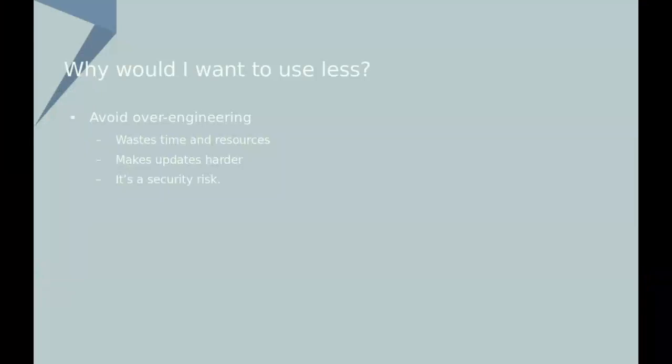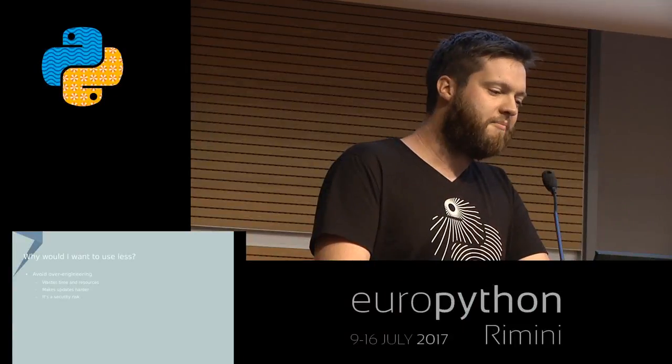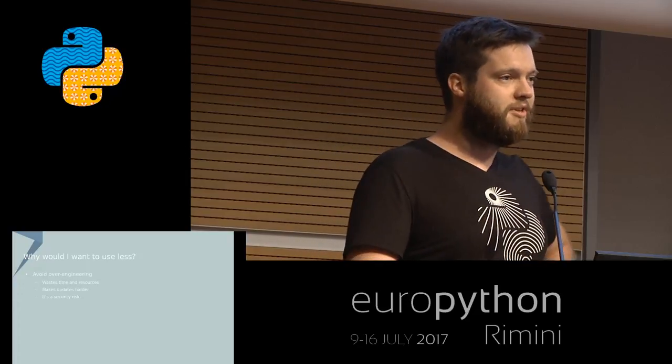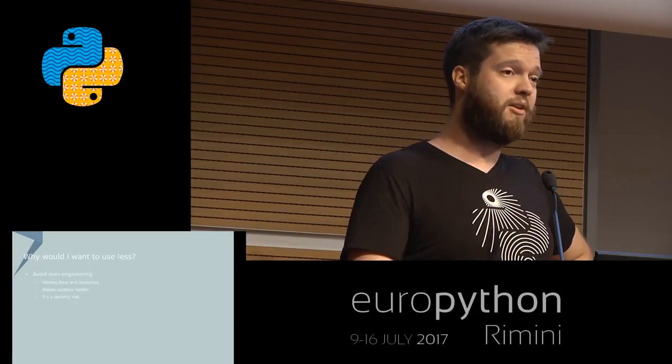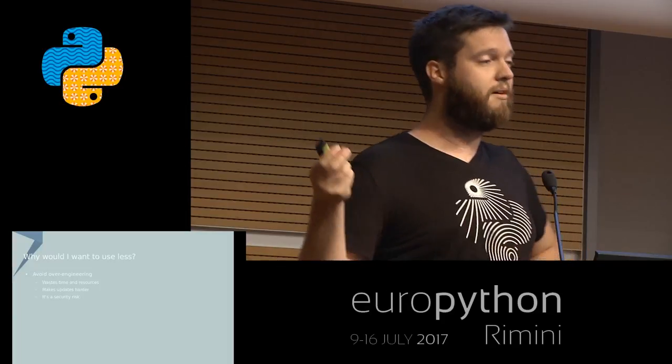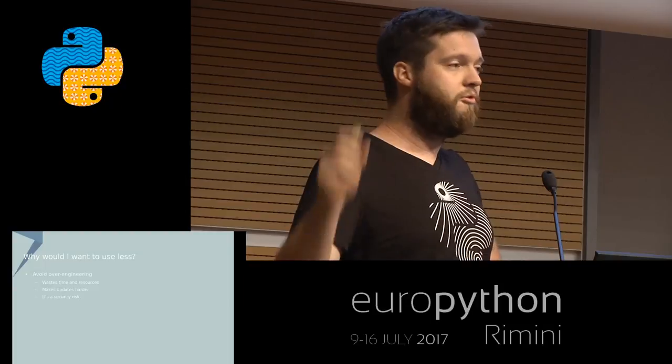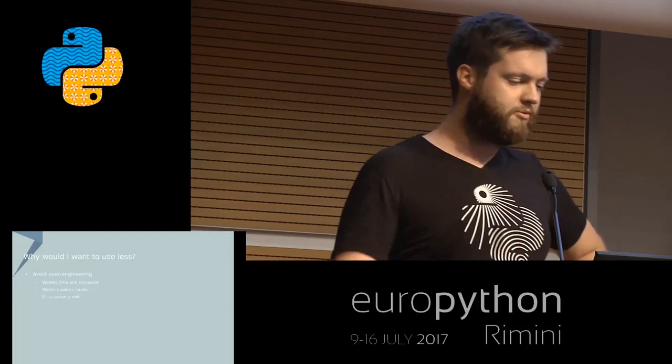A second motivation for using less could be to avoid overengineering. Overengineering is a bad idea in most situations. It wastes your time, it wastes your resources, and it generates a lot of dependencies which can make it hard to update stuff. If you just want to make a website for your parents to have their favorite cookie recipes or something, maybe you don't need to use Django for that. And of course it's always a security risk to use more stuff, because more stuff means more surface and more surface means more attack vectors.